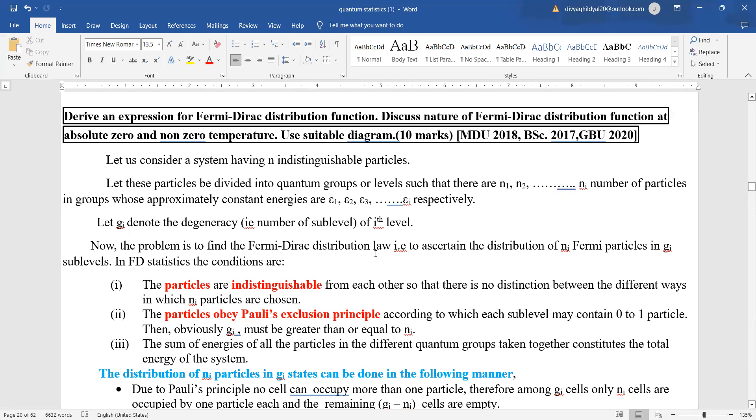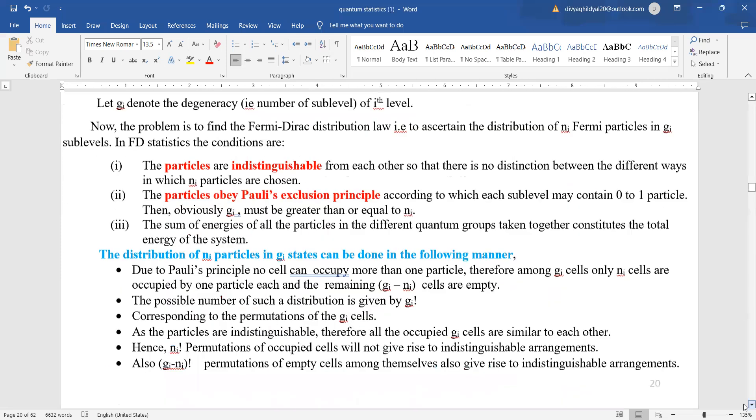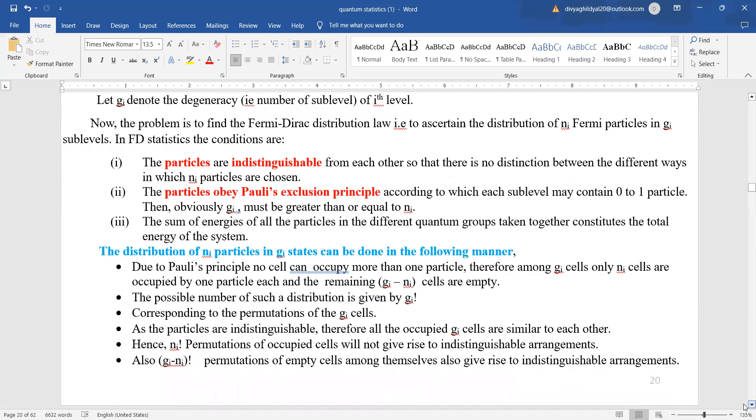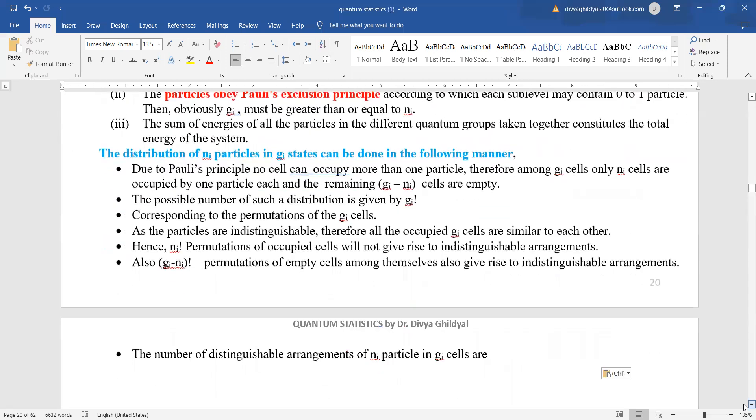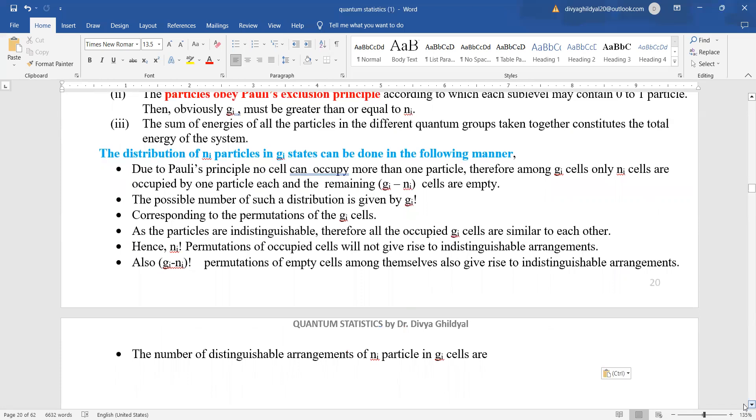Now in order to find the Fermi Dirac distribution function we should once again remember that they are following the Pauli's principle. Total number of particles sum and total energy is a constant, and from Pauli's principle no cell can occupy more than one particle.